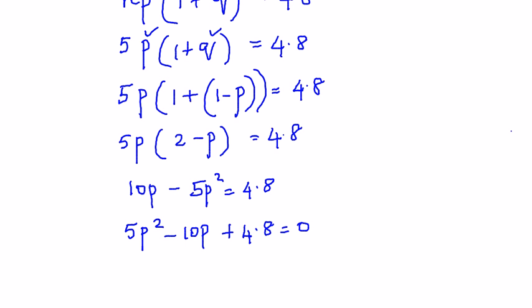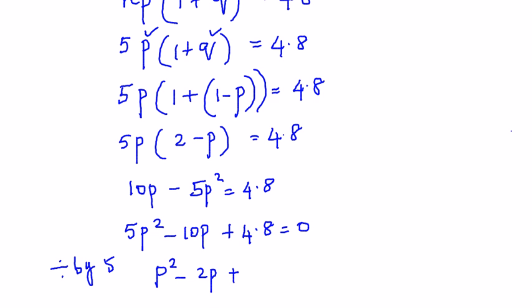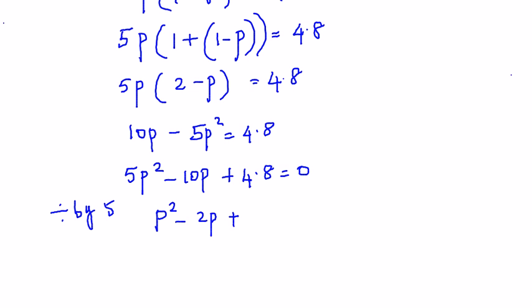Now I am going to divide throughout by 5 for simplifying the equation. This becomes p² - 2p, and 4.8 divided by 5 is going to be 0.96, so p² - 2p + 0.96 = 0.